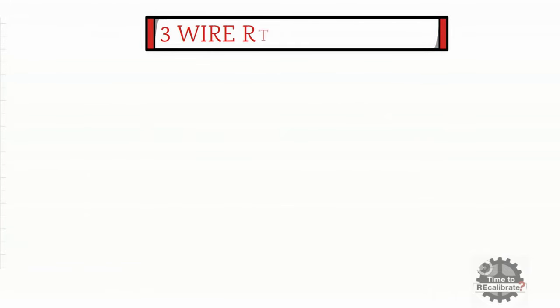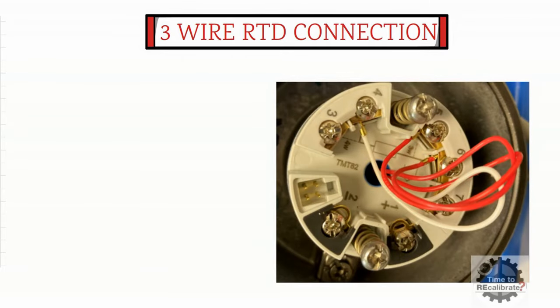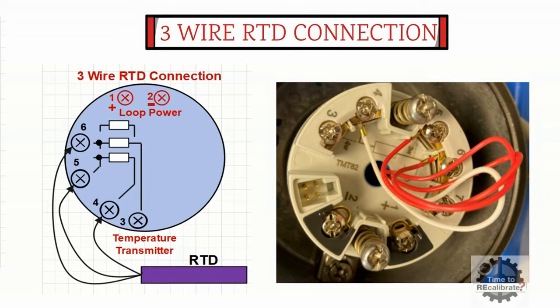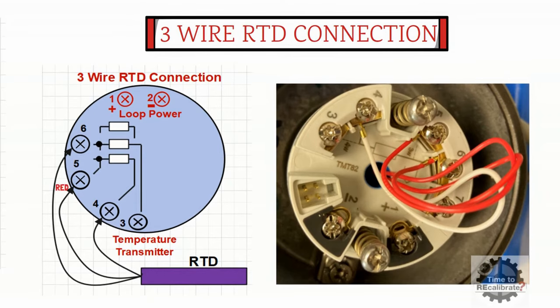In this section, I am going to show how to connect 3-wire RTD to a temperature transmitter. As the name suggests, 3-wire RTD has 3 cables: 2 red cables and 1 white cable. To connect 3-wire RTD to the temperature transmitter, connect one of the red cables to terminal number 5 and another red cable to terminal number 6. After this, connect the white cable to terminal number 4 of the temperature transmitter. Once you are done with the RTD connection, turn on the loop power supply and check the reading on the display.